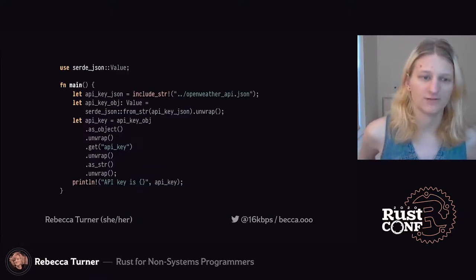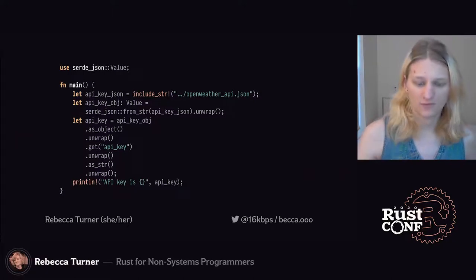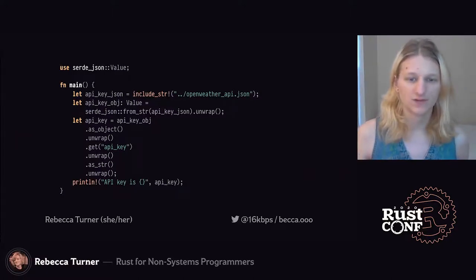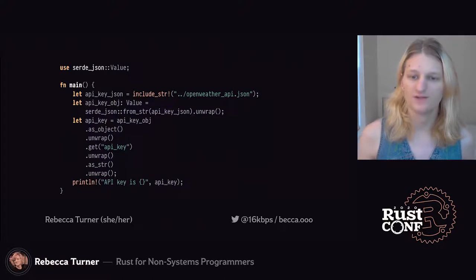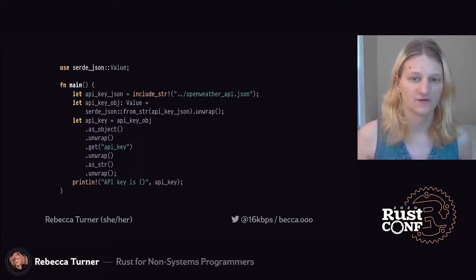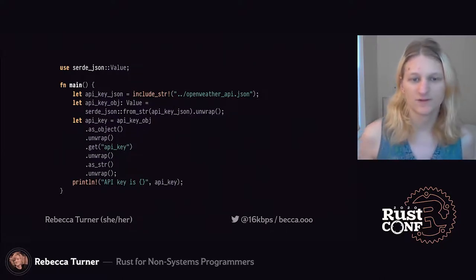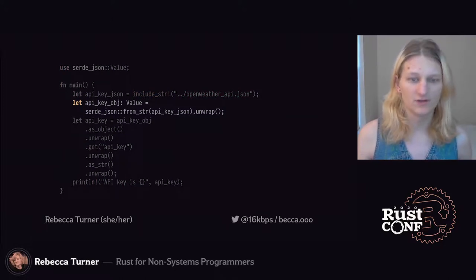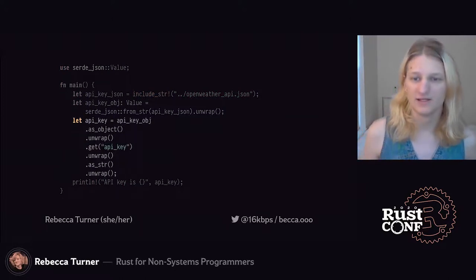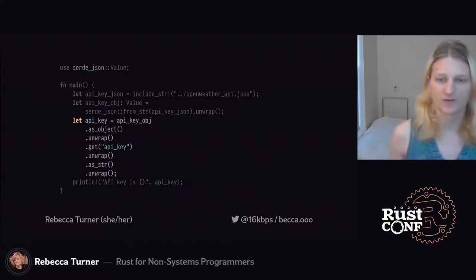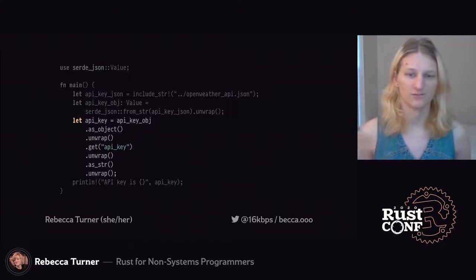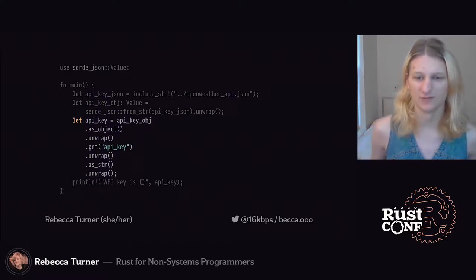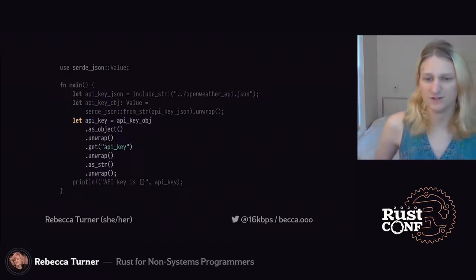Here's a start at a line-by-line conversion of that Python program. First, we're using the `include_str!` macro, which reads a file as UTF-8 at compile time. Next, we're using the `serde_json` crate to parse that string into a JSON value, and then we get the `api_key` out of the object as a string. Each time we assert something about the type of value in this object, we need to `unwrap` it, because we might not have the value of the type we want, so we need to deal with that somehow.